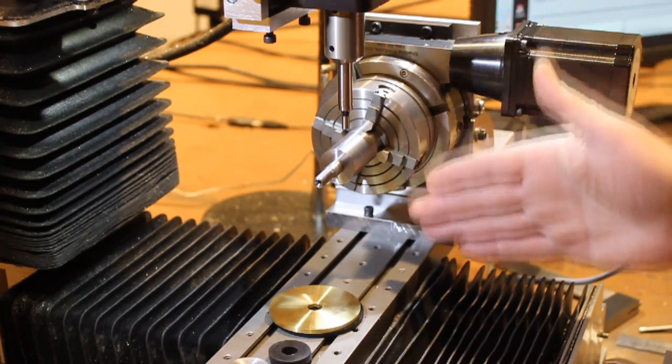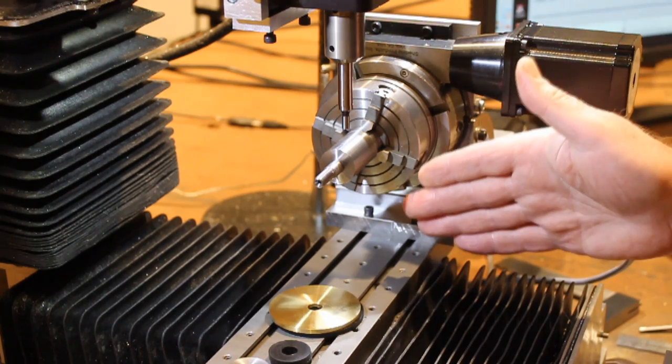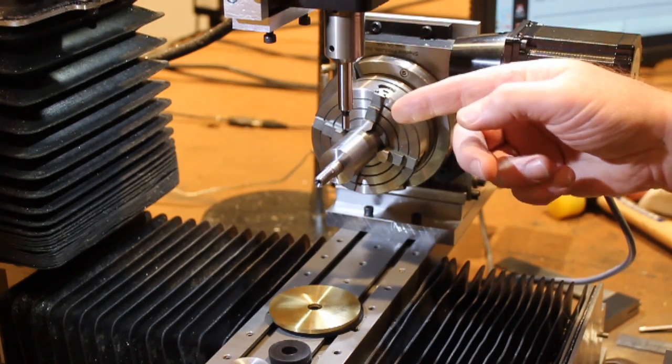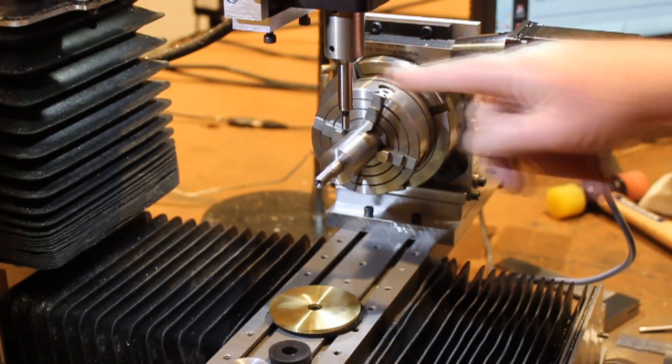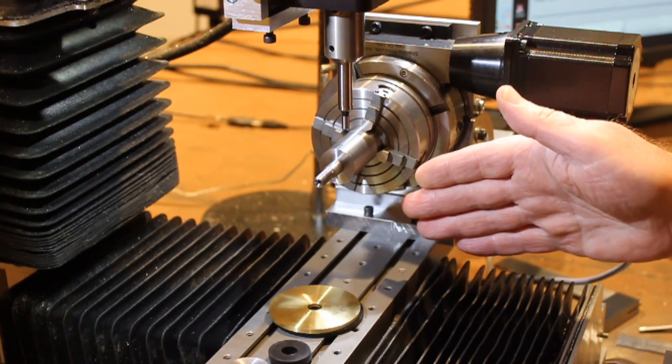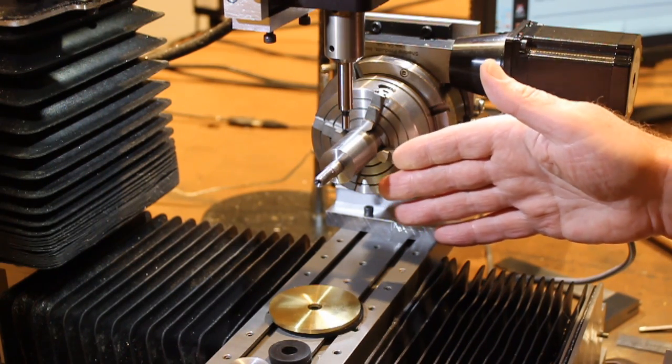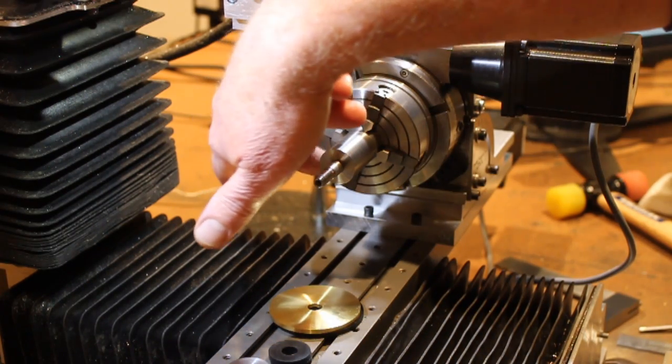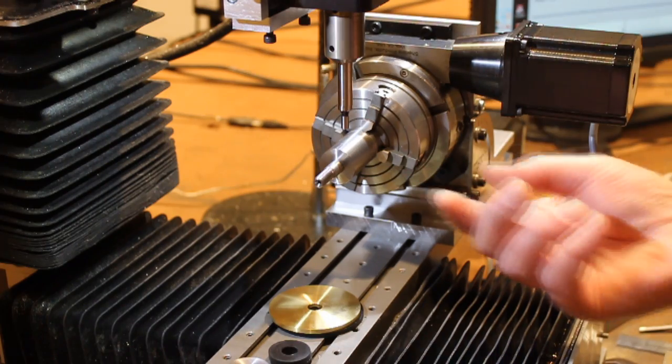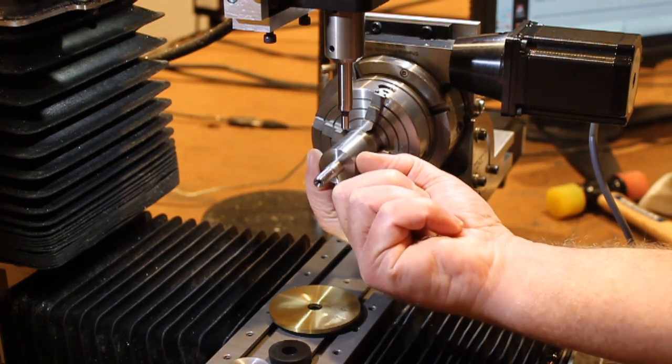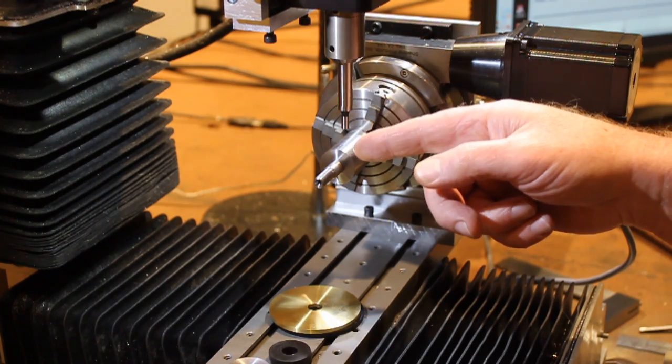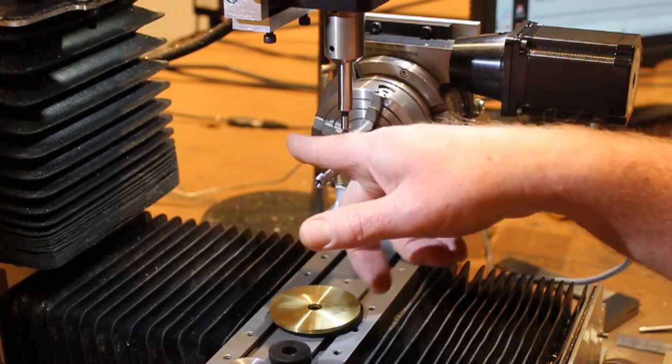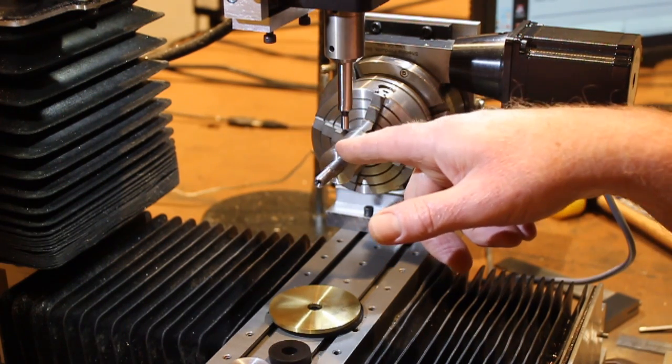The rotary table is perfectly perpendicular to the table and parallel to the spindle, both in the y-direction and the z-direction. I just finished taking my edge finder and finding the back of my arbor, and then I measured the arbor, took half its diameter, its radius, and I advanced the spindle to the center point.